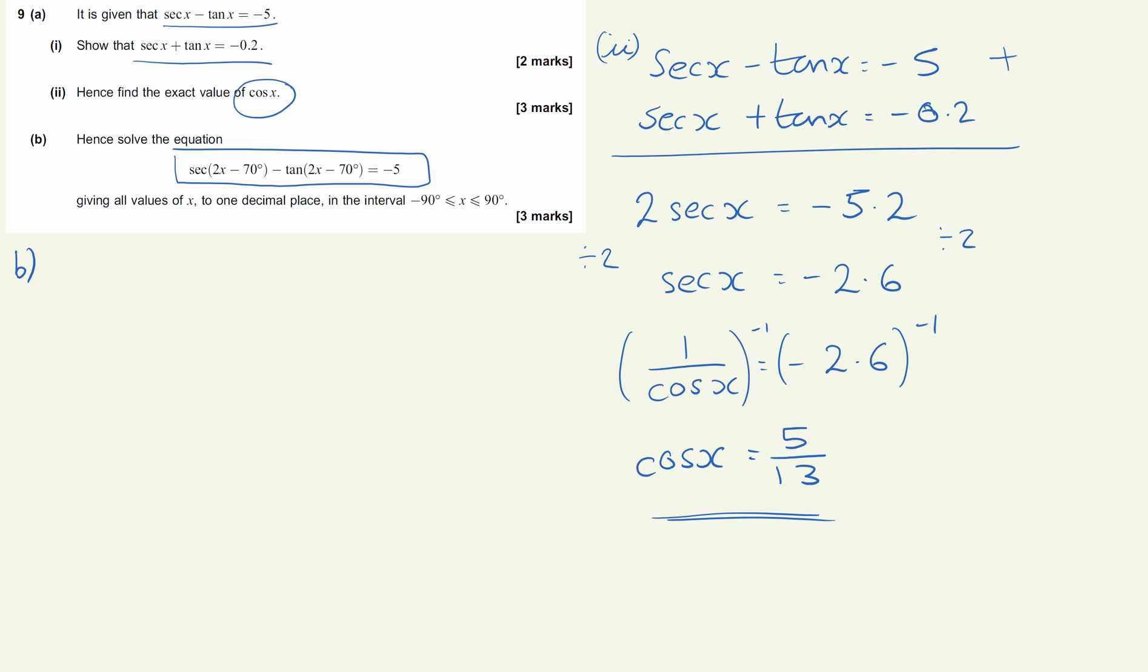Now what this is, we've got our original equation up here, and we've just shown that the exact value of cos is equal to 5 over 13. So we've already solved this. So what we're actually looking at here is a situation where it's cos 2x minus 70 degrees is equal to minus 5 over 13. So as we learn in core 2, we're going to have to adjust our range here. So let's find our principal value first.